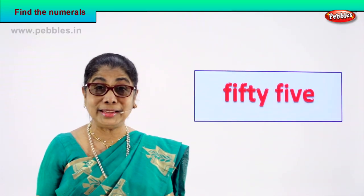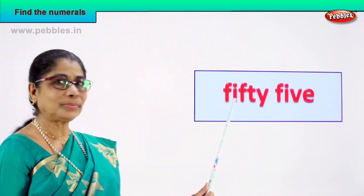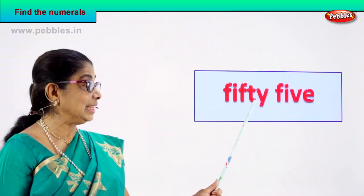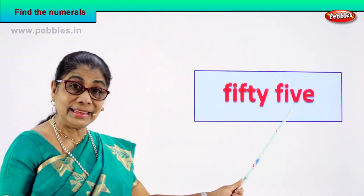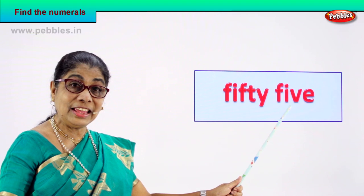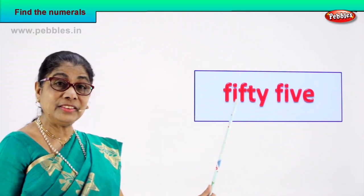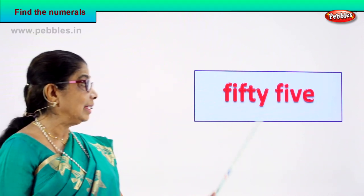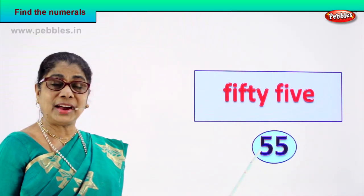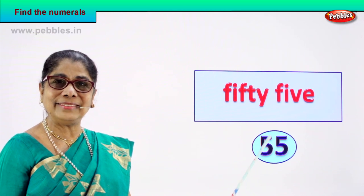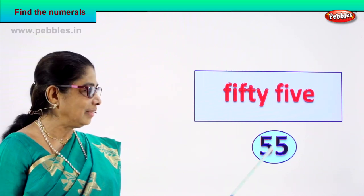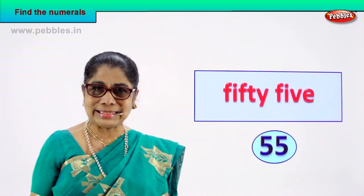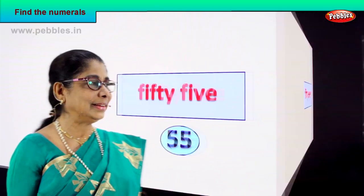Shall we take the next one? Yes, read carefully and find the numeral for me. F-I-F-T-Y, 50. F-I-V-E, 5. 55! So what is the numeral? How do you write it? 5 and 5 — 55. Good, 5 and 5, 55!